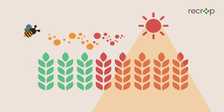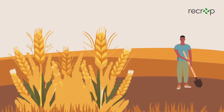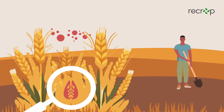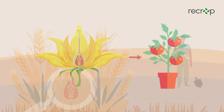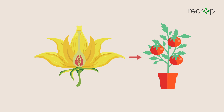In wheat fields, high temperatures might cause pollen to become unviable, preventing it from fertilising the eggs and leading to fewer grains. Similarly, in tomato plants, excessive heat can impair both the growth of pollen tubes and the viability of eggs. This disruption results in crop losses.